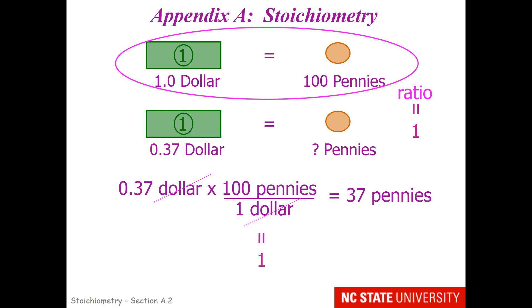Mentally, the conversion you would make if you were asked how many pennies are in 0.37 dollars, is you take what you're given, which is 0.37 dollars, and multiply it by the ratio of 1 over 1, making sure that the units cancel out. You would multiply by 100 pennies, not divide by 100 pennies, in order to make the units cancel out and come up with 37 pennies.